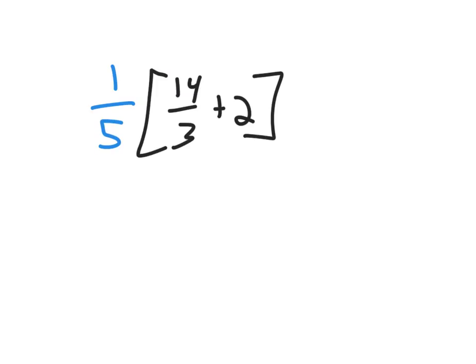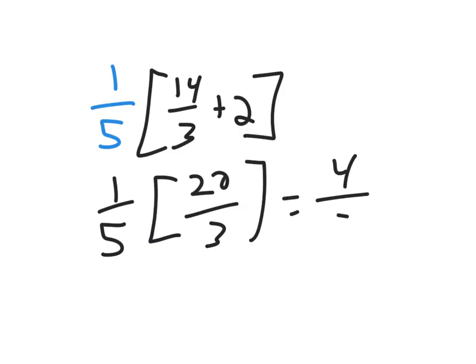So when you add those two fractions together, you get 20 over 3. So that simplifies to be 4 thirds for your final answer. That's the average value.